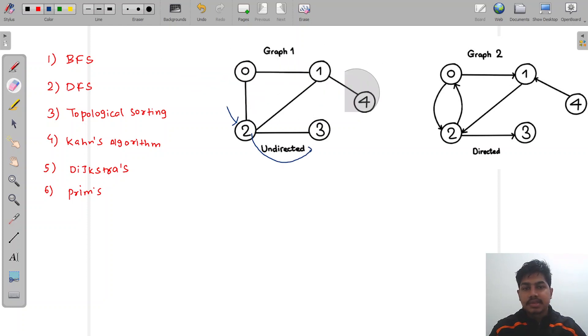DFS is also a graph traversal technique, but DFS explores a particular branch first, then it moves on to the next branch. If we start DFS from node zero, it will first visit one, then it will explore the whole branch of one—that is, then four will be visited. Now nothing more is left to explore, so we'll backtrack from here.